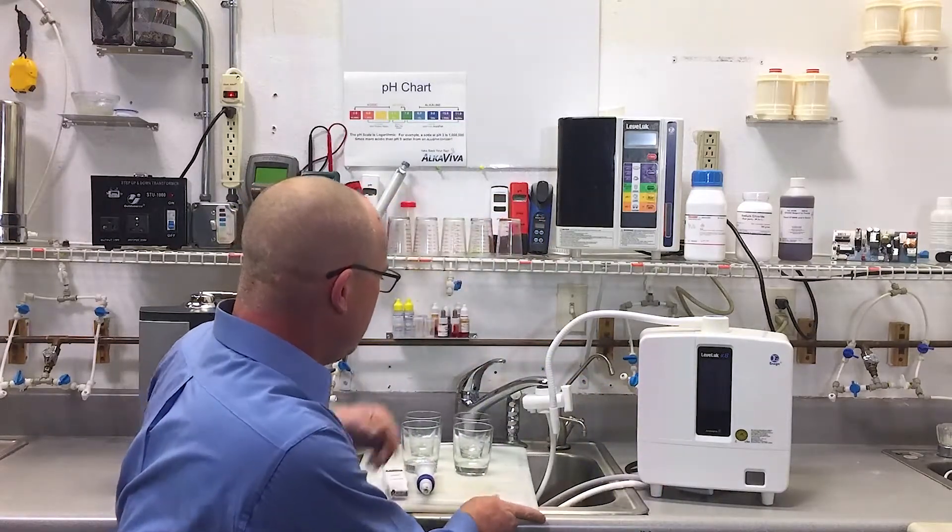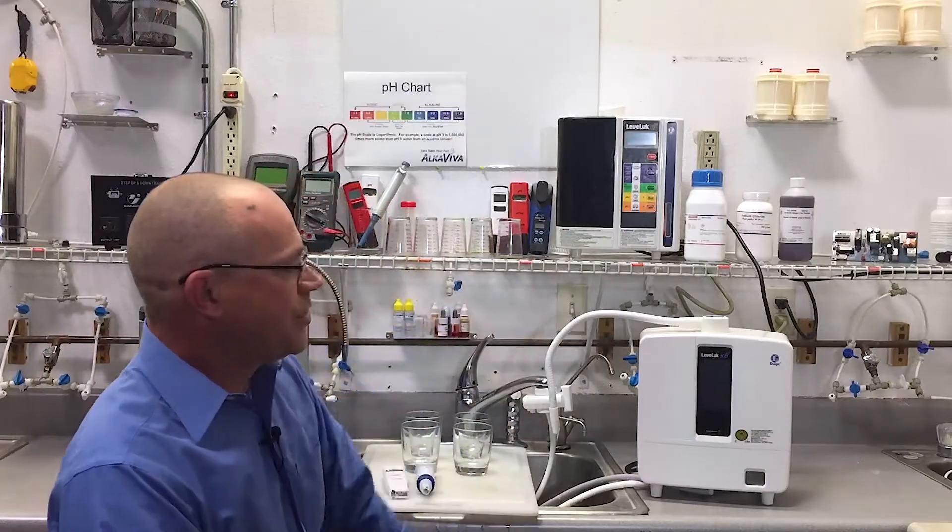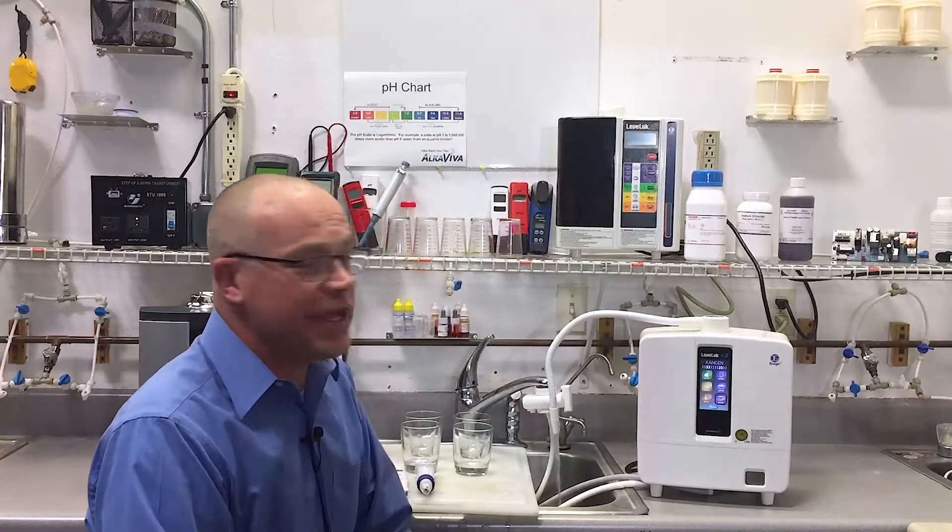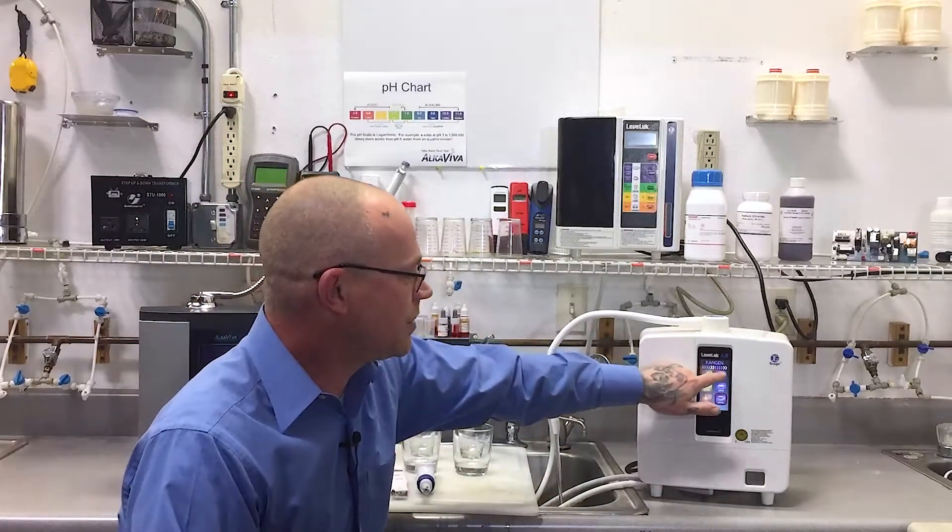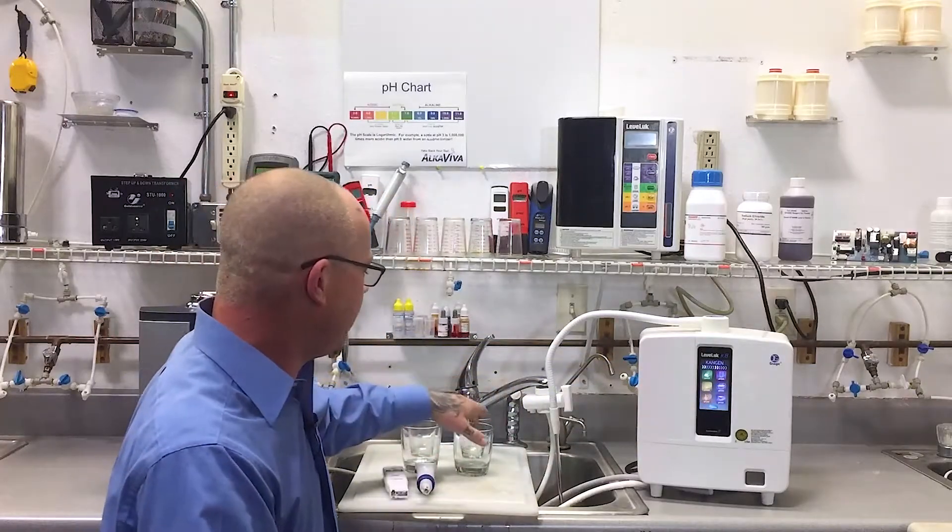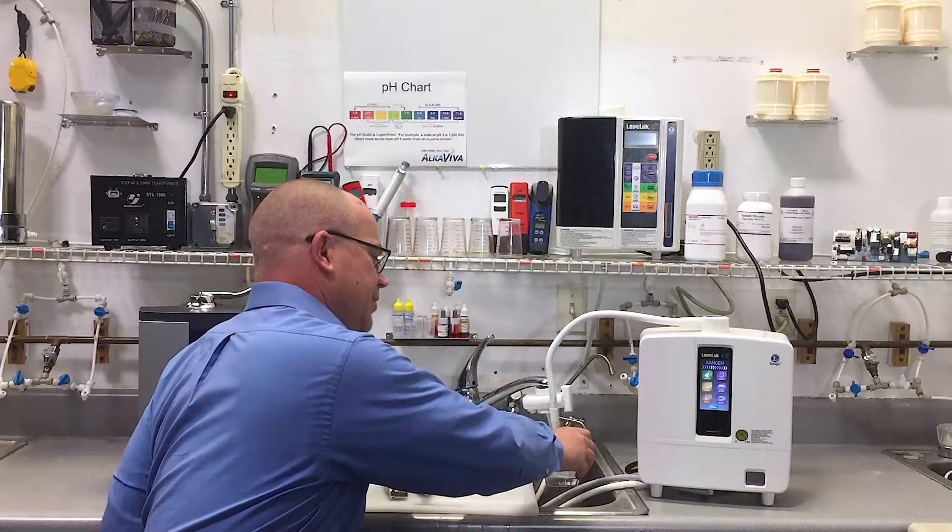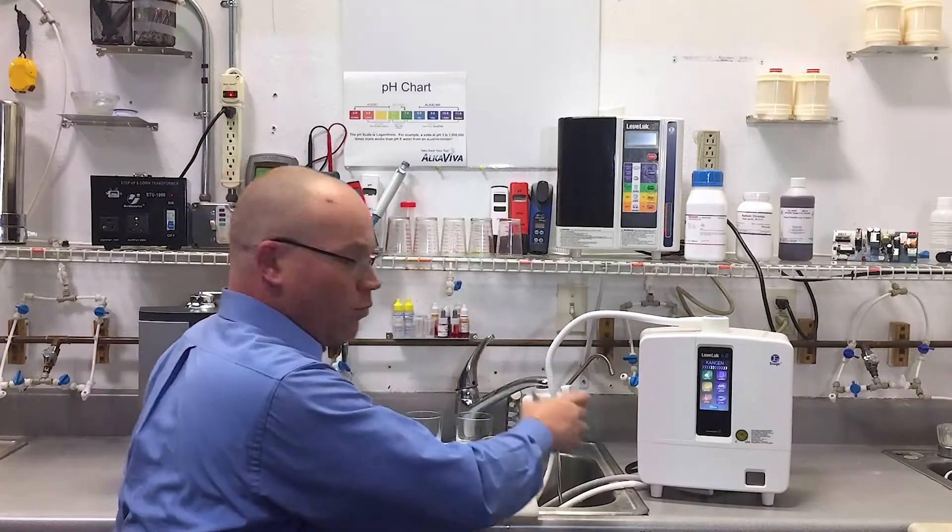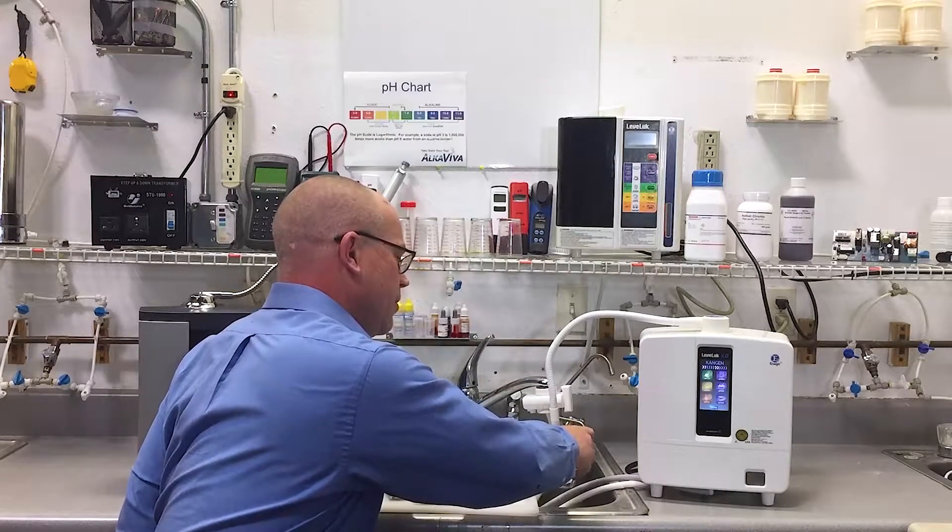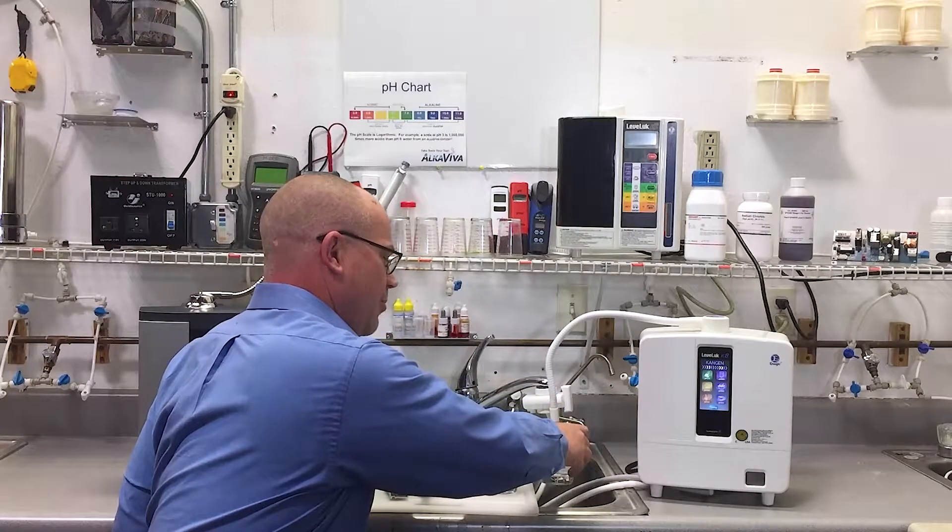Knowing that it's that important, we obviously want to test that here today as well. So let's start with the K8. We're going to start by testing the highest alkaline level, so the Kangen 9.5. We're going to get two samples, one for H2 and one for ORP.